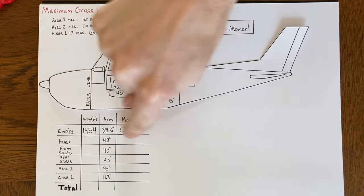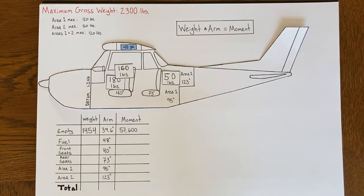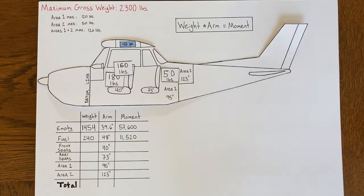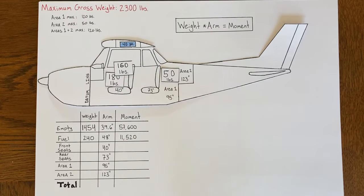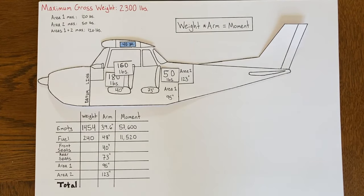The first row is for fuel. We have 40 gallons, and Avgas weighs 6 pounds per gallon, so 40 times 6 equals 240 pounds of fuel. The moment is weight times arm: 240 pounds times 48 inches equals 11,520 inch-pounds. You'll often see moments divided by 1,000 — so 11.52 instead of 11,520 — just to make the numbers smaller and easier to work with.